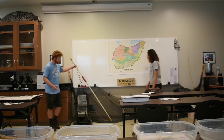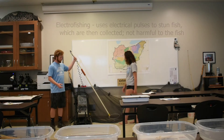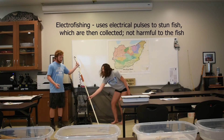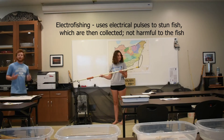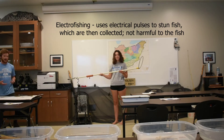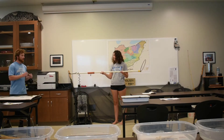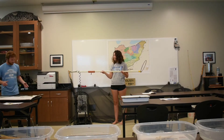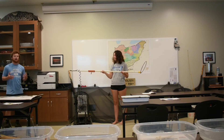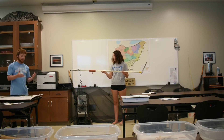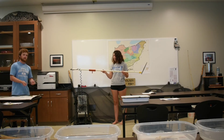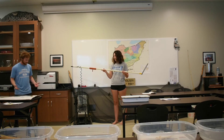A second method, right here, is an electrofisher. So right here, it creates a circuit, and it sends mild electric shocks throughout the stream, which causes fish muscles to contract and float to the surface. That way, we are able to collect them in nets.